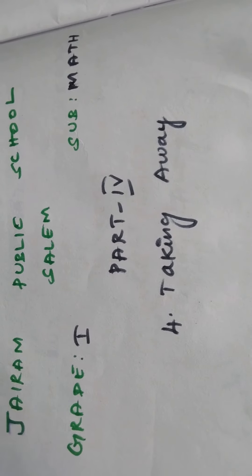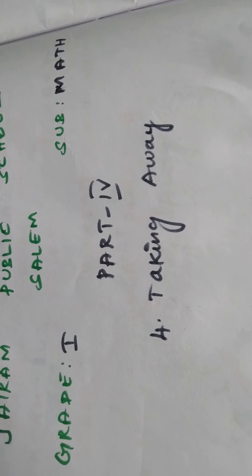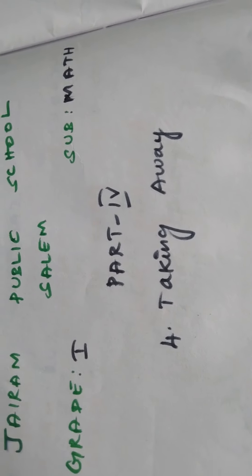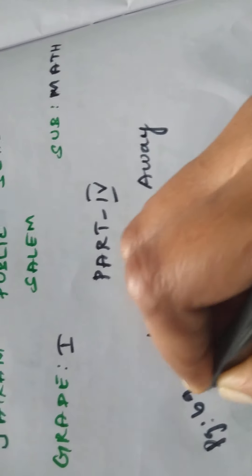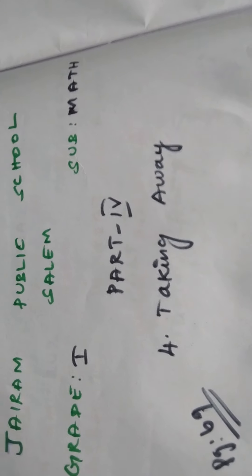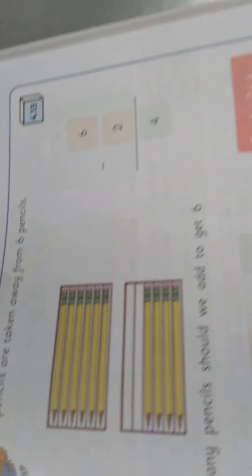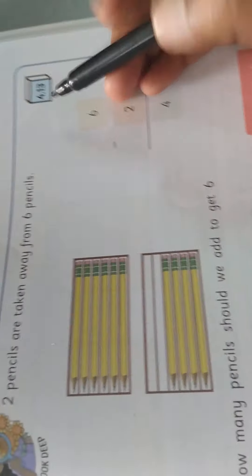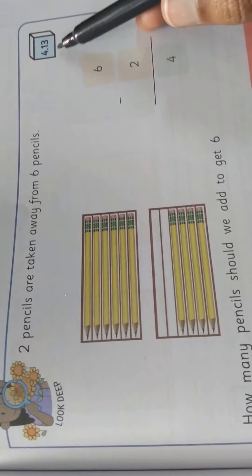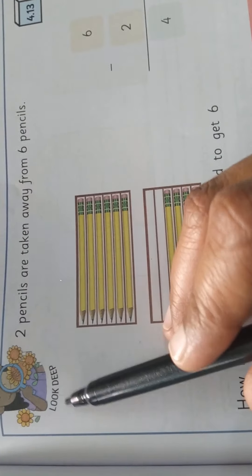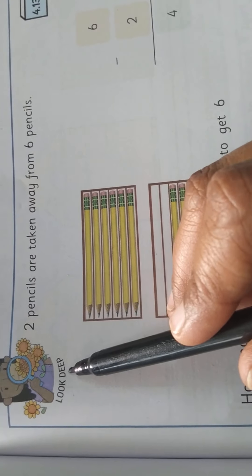Okay children, I hope you all finished your home fun. Now take your studio, take page number 69 children. See in page number 69, activity number 4.13 — look deep activity.